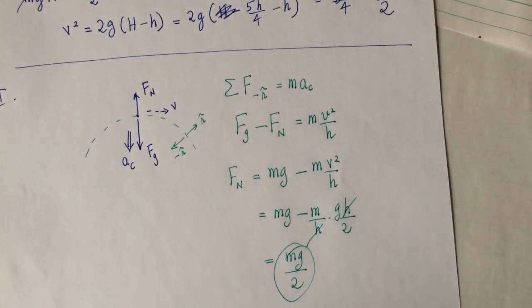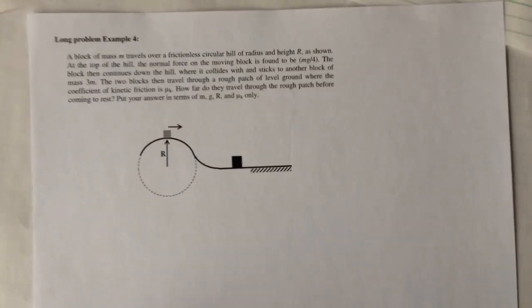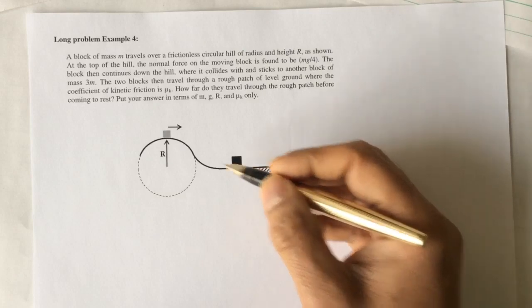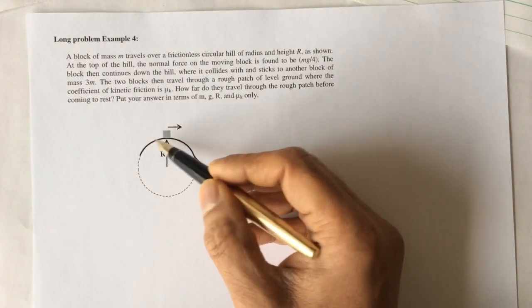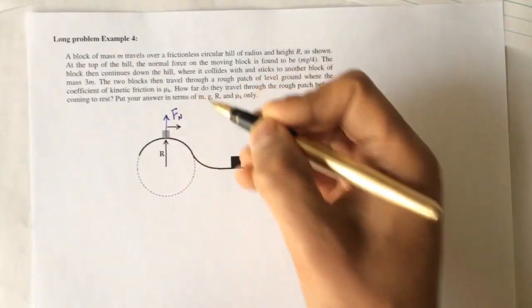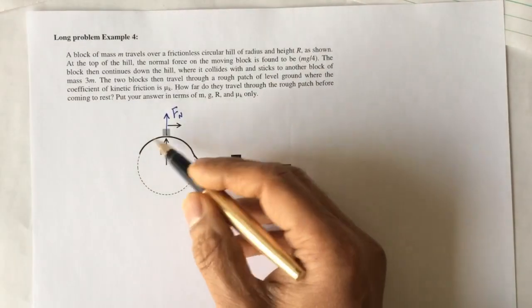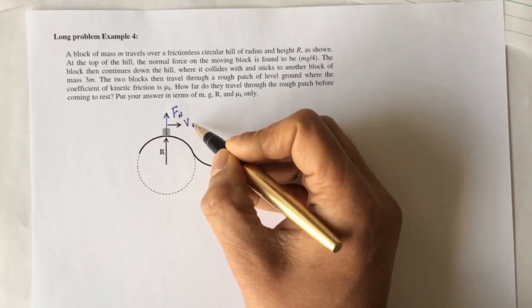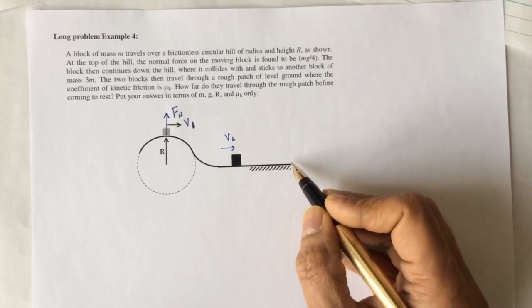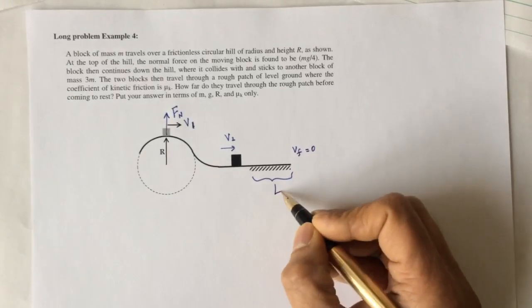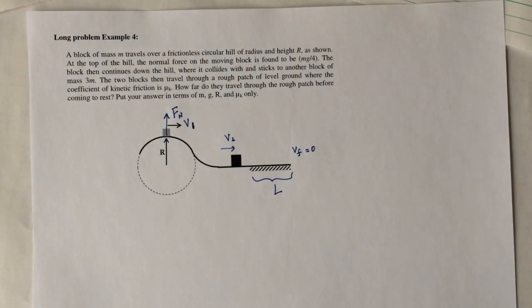That's a nice little algebraic problem — no numbers to deal with. The next problem is also algebraic. It's a multi-stage concept problem. The object first descends, gaining speed. There are three speeds to track: v1 at the top of the hill, v2 at the bottom, and the final speed is zero after the friction patch, having traveled some length L.